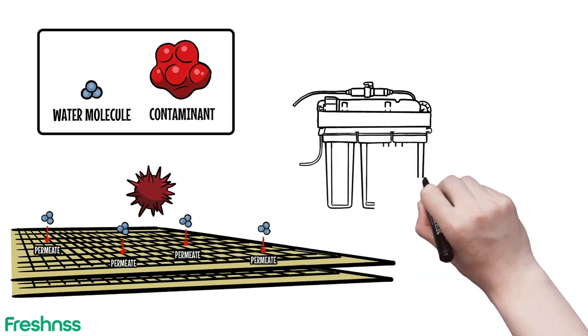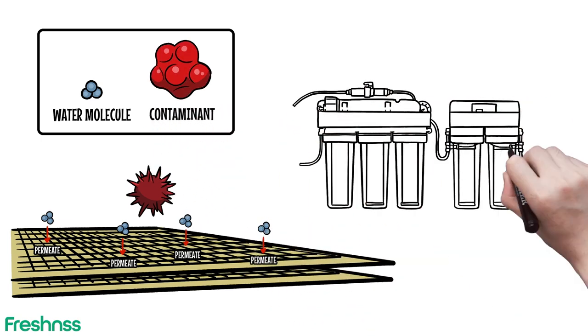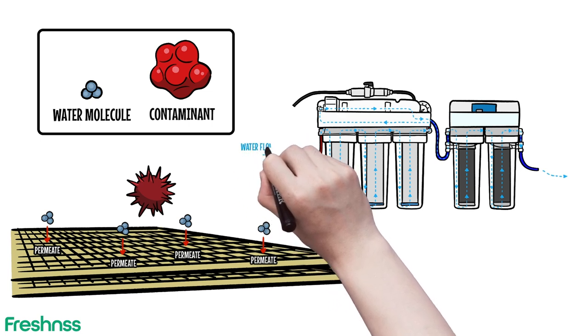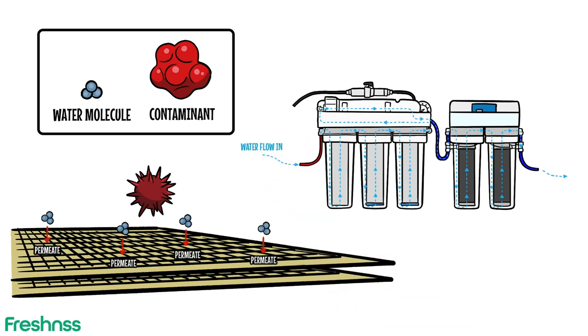The pure and clean water makes its way through the membrane layers and into the central core tube. Lastly, purified water exits the membrane tube and is ready for dispensing.